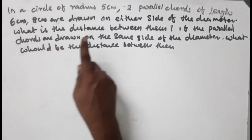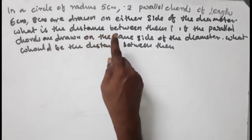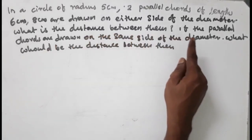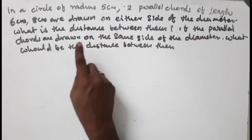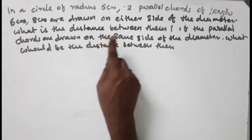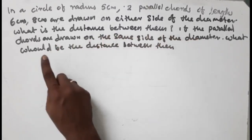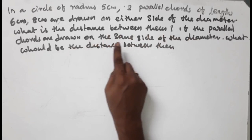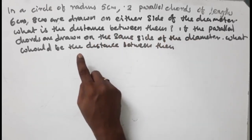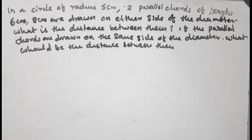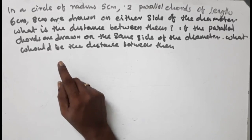The circle has radius 5 cm. Two parallel chords of lengths 6 cm and 8 cm are drawn on either side of the diameter. What is the distance between them? If the parallel chords are drawn on the same side of the diameter, what would be the distance between them?